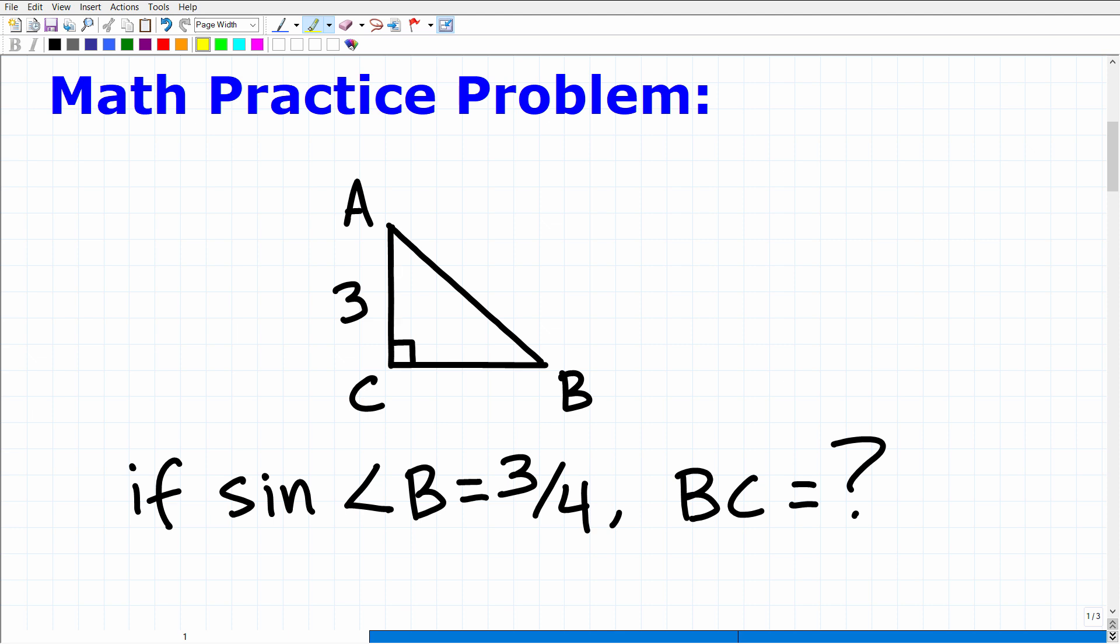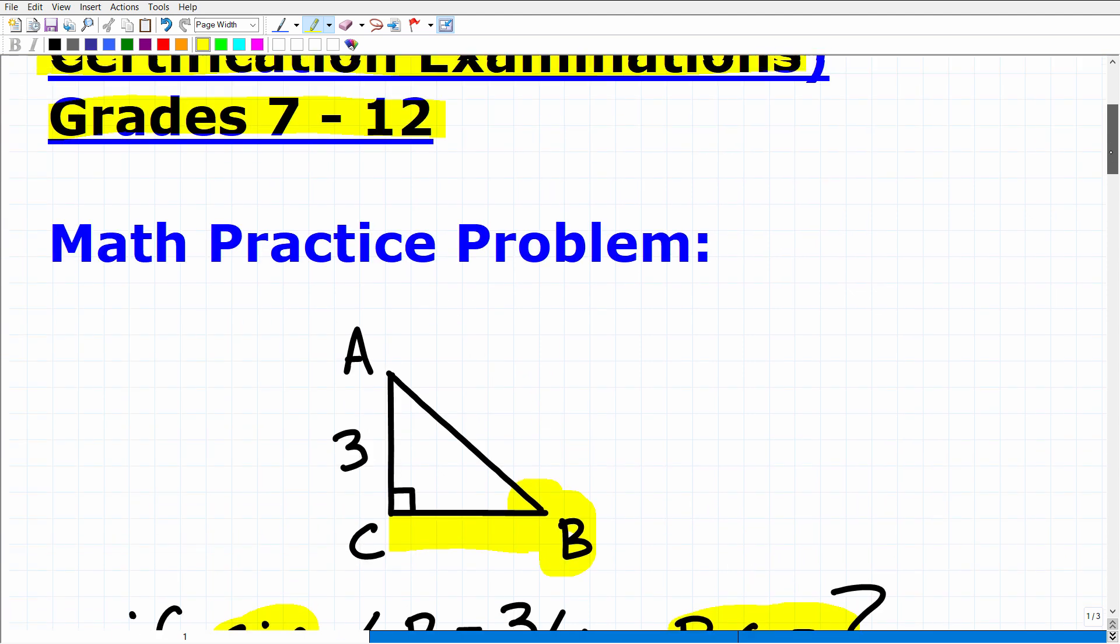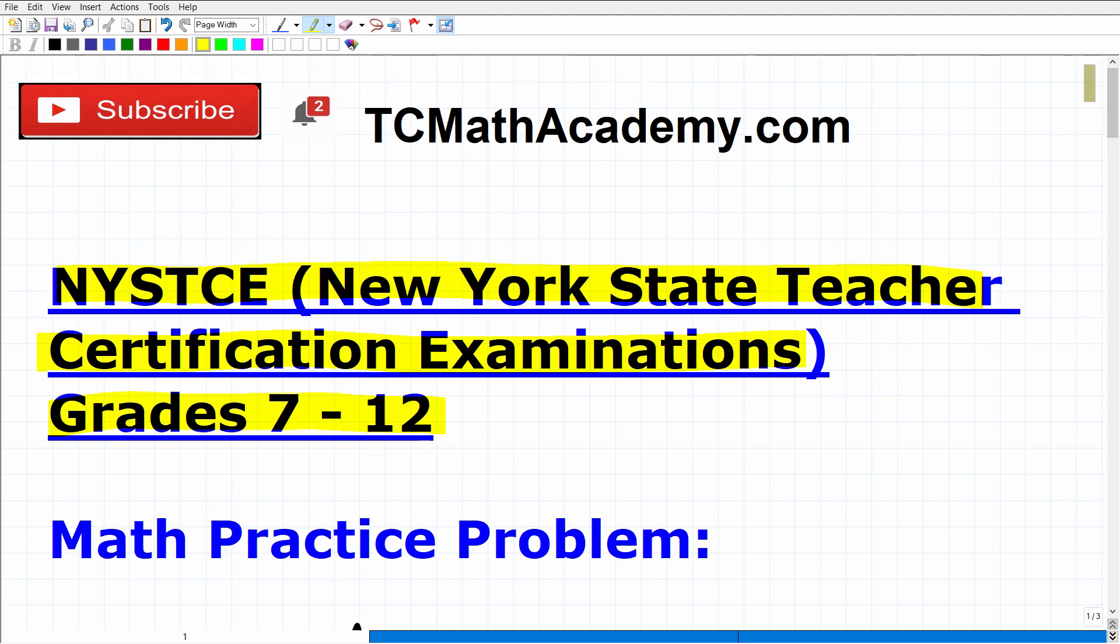So here we have a right triangle, and we're being told that the sine of angle B right here is 3 fourths, and we're looking for this side right here, CB. What is that distance? So that is the problem. Feel free to pause the video, work on this. If you could solve this, go ahead and put your answer into the comment section. I'm going to show you the correct answer in just one second, and then of course I'm going to solve this step by step.